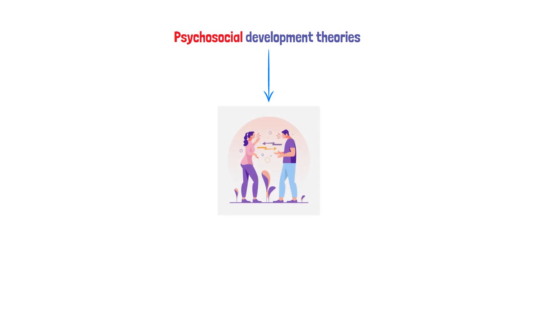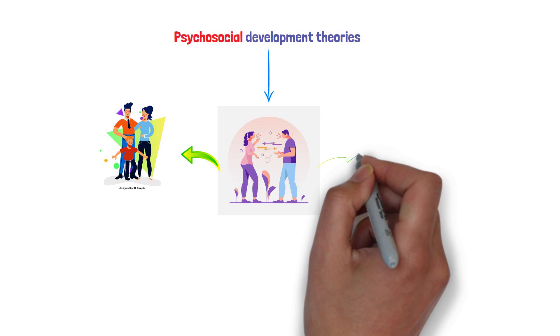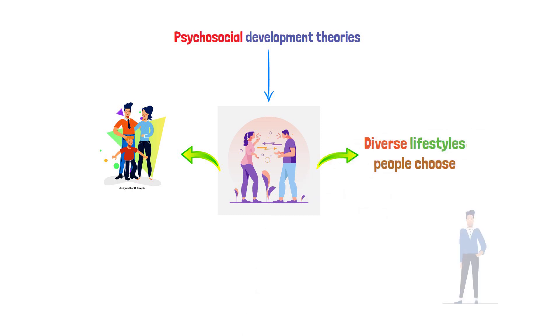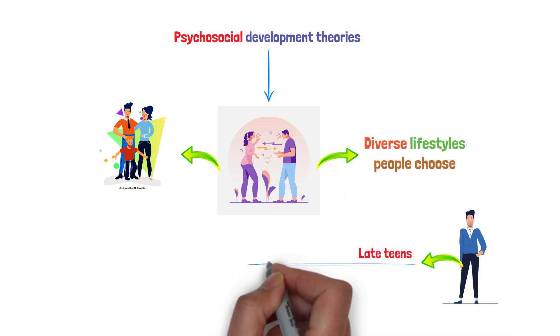This includes the dynamics of family life and the diverse lifestyles people choose. Emerging adults, typically in their late teens to mid-twenties, often prioritize constructing a set of personal beliefs and values as essential to attaining adult status.